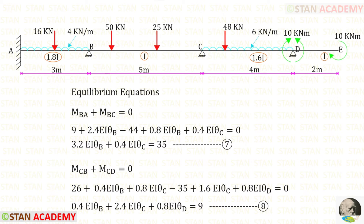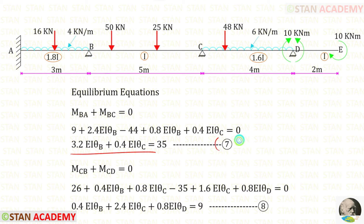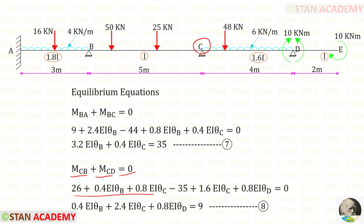Now let us make the equilibrium equation at joint B. We know that MBA plus MBC equals 0. From the slope deflection equations, let us apply the expressions for MBA and MBC. When we add them we get the equation — keeping numerical terms on the right side. Let us call this equation number 7. At joint C, MCB plus MCD equals 0. Applying those expressions and adding gives equation number 8.